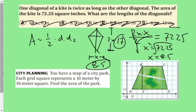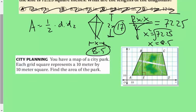Okay, you have a map of the city park. Each grid is represented by 10 meters by 10 meters. Find the area of the park. So each of these spaces are 10, is what it's saying. So that's 10, 20, 30, etc. So 10, 20, 30, 40, 50, 60, 70. That would be 70. 10, 20, 30, 40, 50. That's 50, the height. And then this is 10, 20, 30, 40. That's 40.